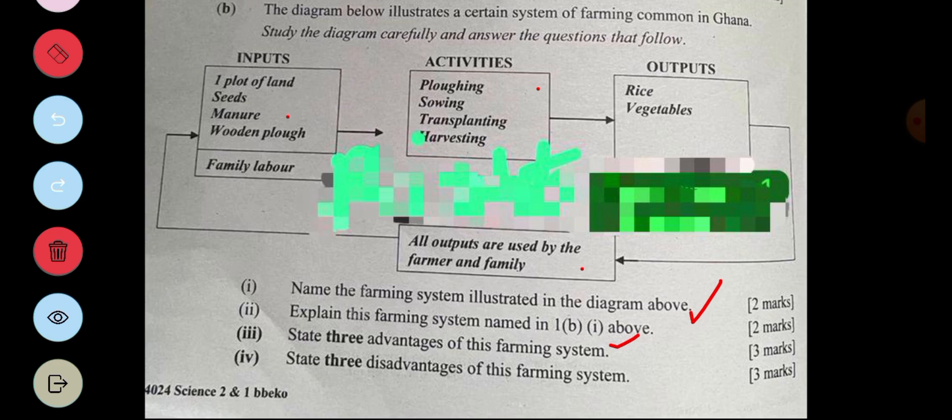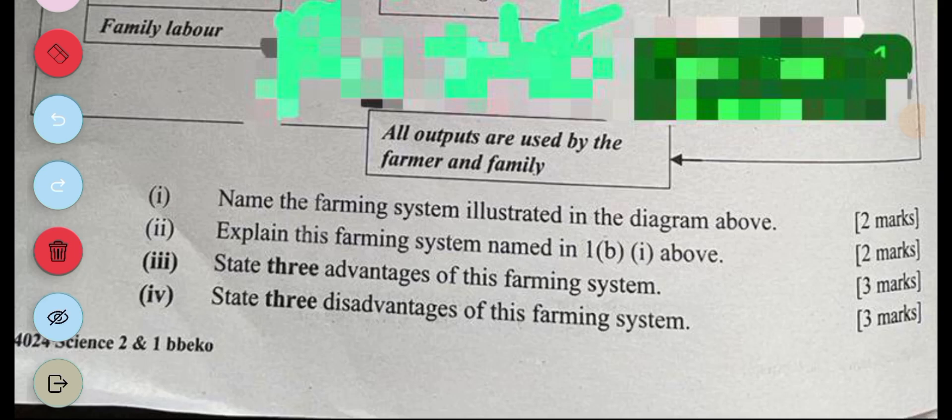Now three disadvantages is that when in a particular year there is no rain, the farmer might not be able to feed his family. And it's going to be very laborious because no machines are used. There's easy spread of diseases and also family labor is unreliable.